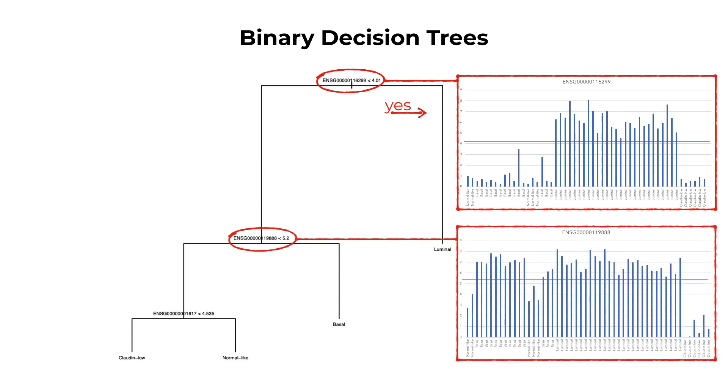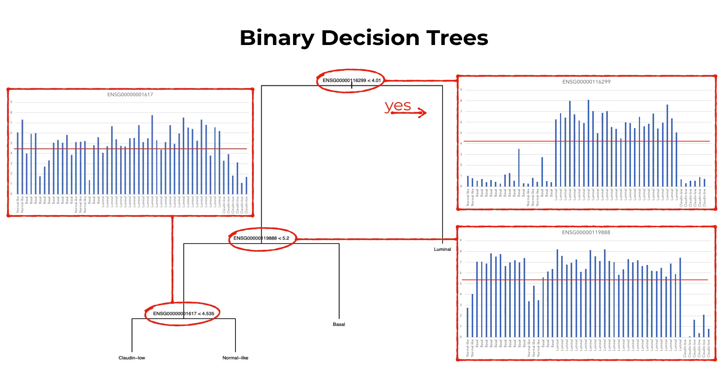Binary means the branch can either be yes or no. If the expression of the gene is higher than X, the classes will separate. The algorithm will continue until it has effectively separated all the samples into some group.